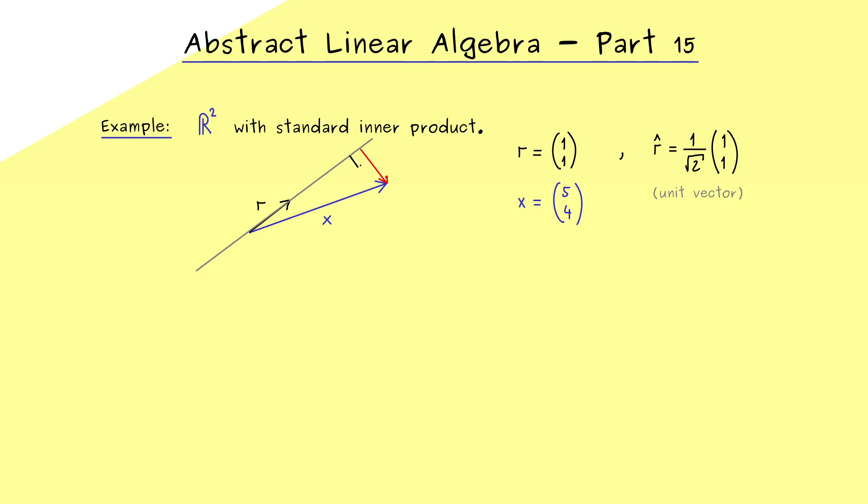And for this, please recall orthogonal projection means that we split the vector x into two components. And the one component that lies completely on the line here is what we call the orthogonal projection of x onto the line. And in order to keep the notation simple, we call this component p and the other one n.